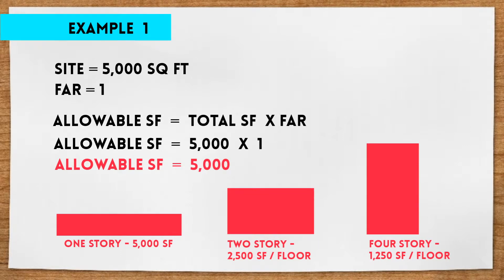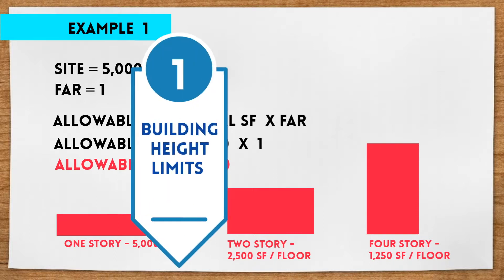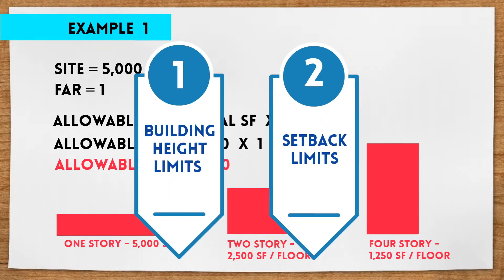Keep in mind that this is just an example. A real building site would most likely also be under building height and setback constraints, which will dictate how many stories the building can be and how far away from the property lines it will have to be.